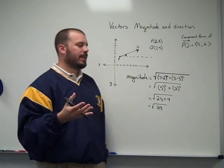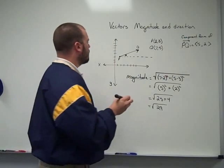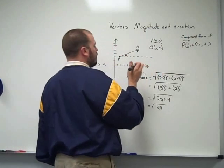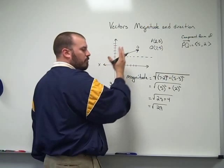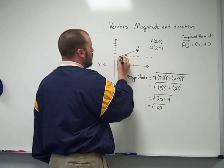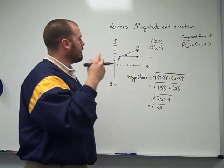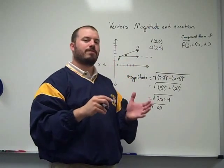And the way I'll find that is using trig. Now if we think about the vector in component form, this vector from initial point to terminal point moves, it has a horizontal component of 5.